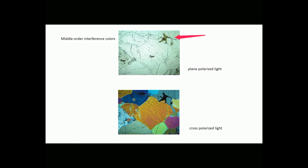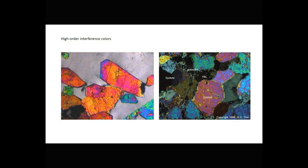Notice also in the plain polarized view, we can see a green grain of spinel. Spinel is an isotropic mineral, so it remains black under cross polarized light. Here we see two views of epidote in cross polars. In the photo on the left, the epidote has quite high-order interference colors, and it's surrounded by grains with gray interference colors — those are quartz.